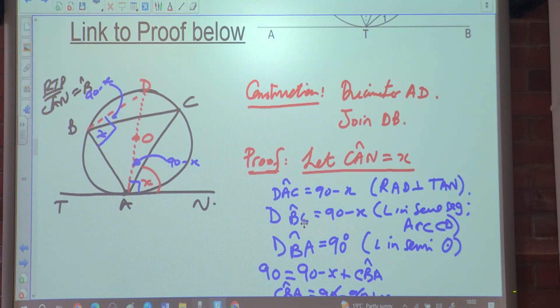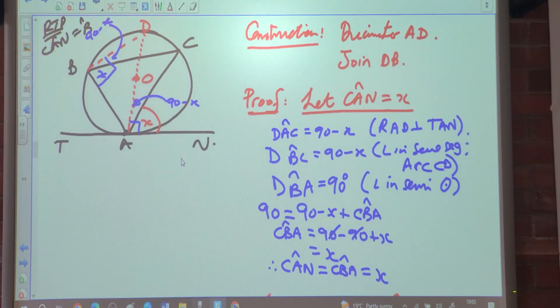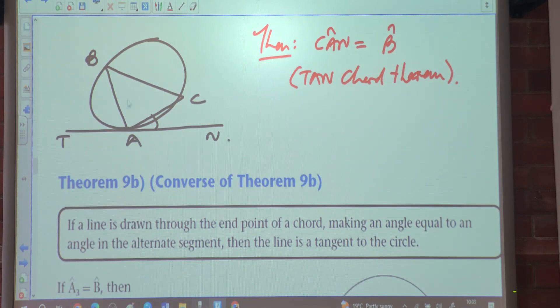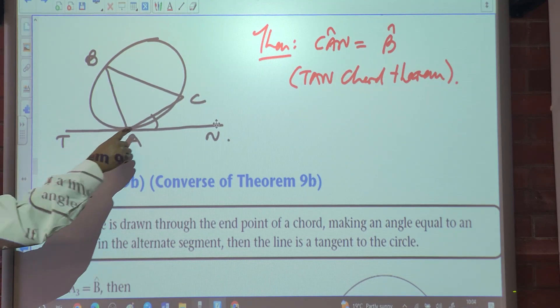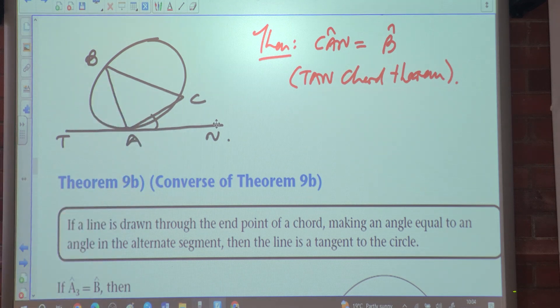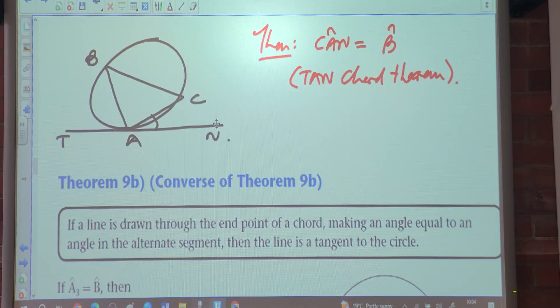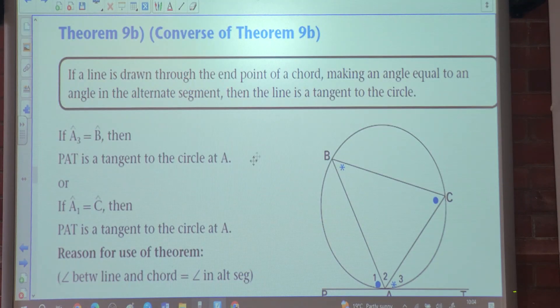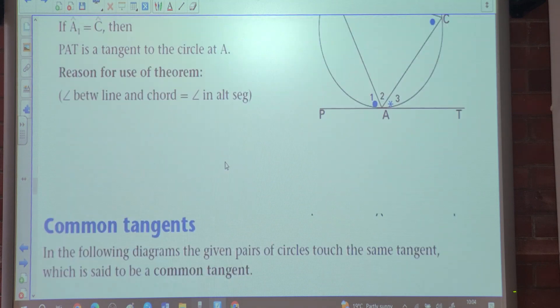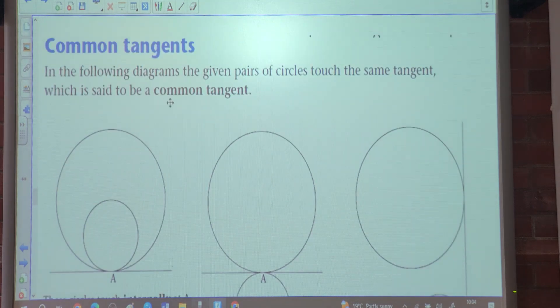Remember that all three Euclidean geometry proofs, you need to do a construction first. No construction, no marks. And if you use this theorem, remember that if you've got triangle ABC and you've got a tangent drawn at point A, then we can conclude that this angle here, which is CAN, is equal to angle B. And the reason for that is tangent chord theorem. The converse is also true, and we spoke about that as well.